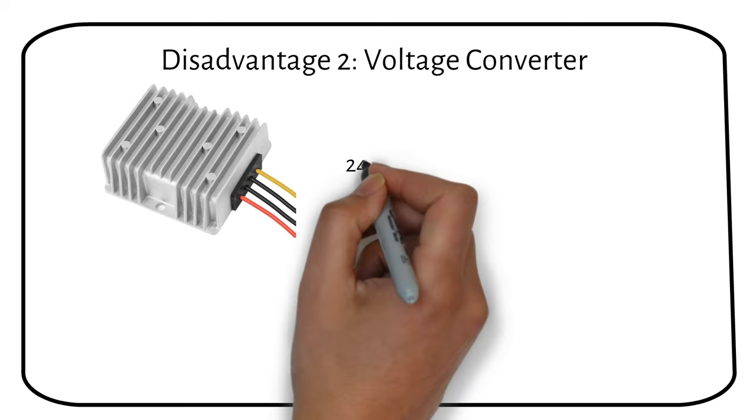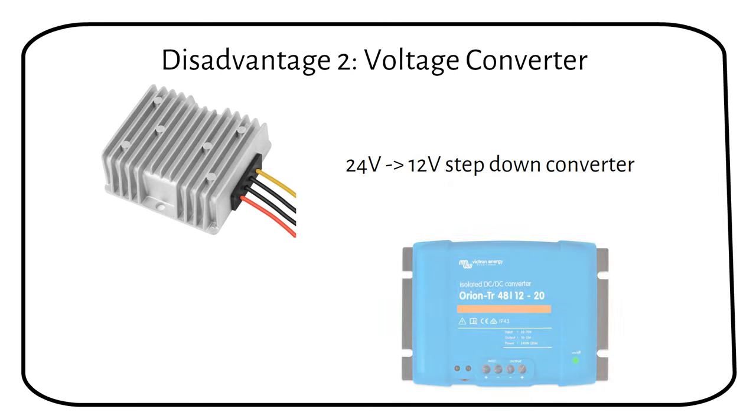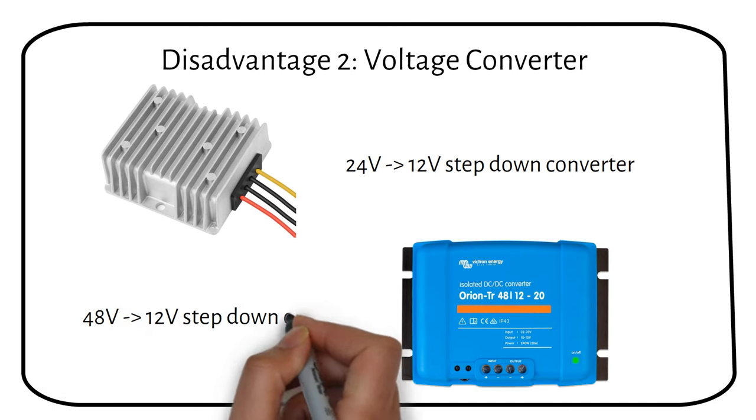If you have a 24 or 48 volt battery, you need to use a 24 to 12 volt or 48 to 12 volt converter to power your 12 volt appliances.